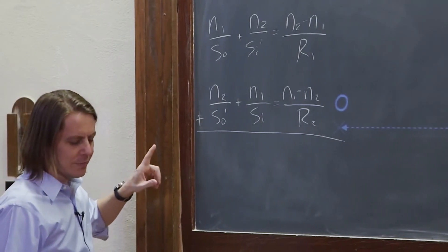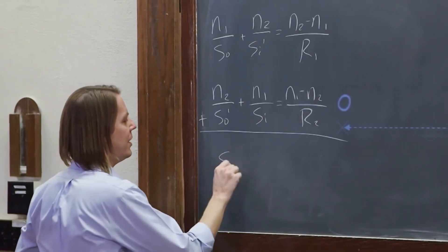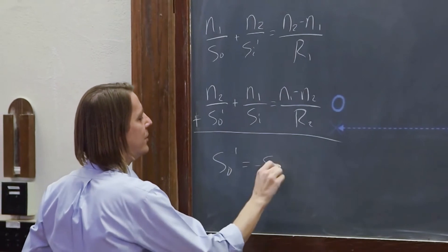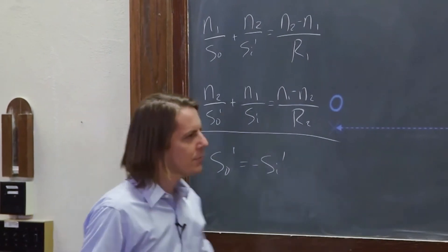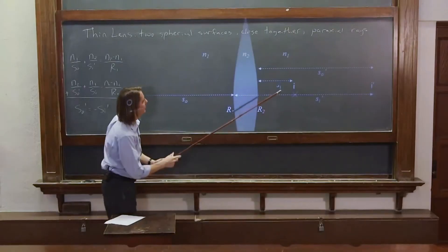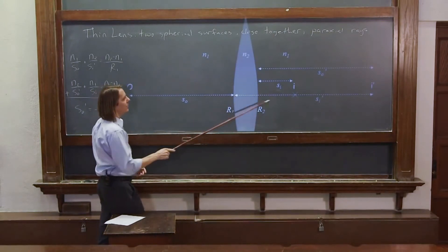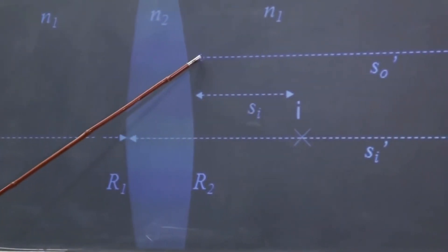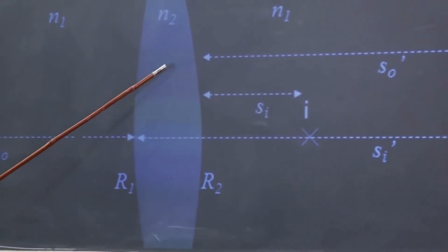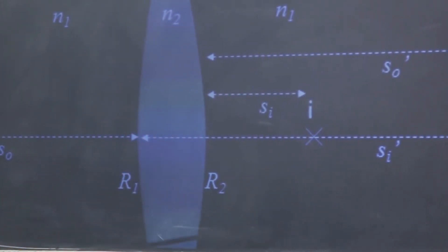And for a thin lens we can get rid of them because we can say SO prime equals minus SI prime. You can see the difference of those two. So here's SI prime is all the way through the lens and the object distance only goes to the back surface of the lens. But the lens is really thin. They're basically the same.